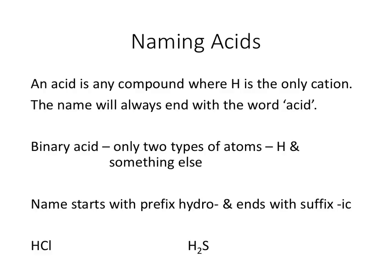To name acids: an acid is any compound where H is the only cation, meaning it starts with H. The name always ends with the word 'acid.' If you have a binary acid — binary means two, so there are only two types of atoms: hydrogen and something else — the name starts with the prefix hydro- and ends with the suffix -ic. So HCl is hydrochloric acid.